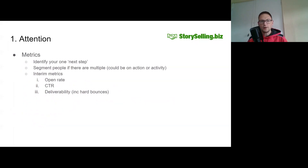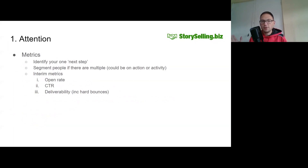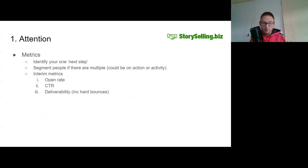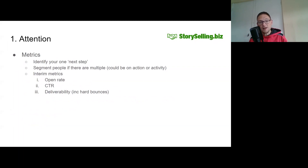To optimize your lead incubator system, obviously you need to have something you can measure. The lead incubator is a system because it has inputs and it has outputs. The inputs are the people that you add to the system — the people you meet at networking events, the people that opt in to your email list from your website. The output is whatever step you define in order for people to initiate a project with you.